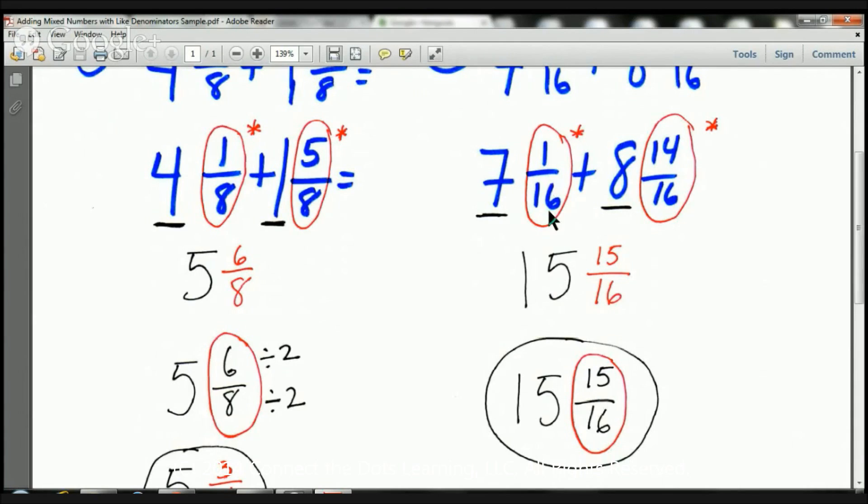Then I'm going to add the fraction parts, 1 sixteenth plus 14 sixteenths. So I'm going to keep the denominator 16 the same. I'm going to bring that down. I've got my 16 there. Then I'm going to add the numerators, 1 plus 14, and 1 plus 14 is 15. So the answer here is going to be 15 and 15 sixteenths.